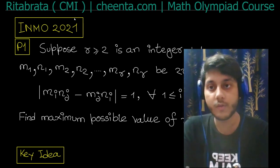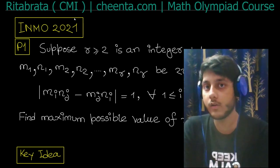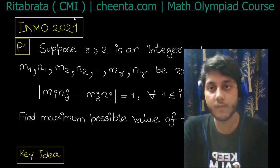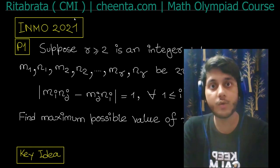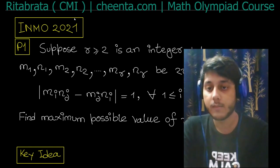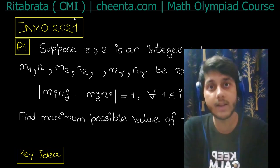The question says: r greater than 2 is an integer. m₁, n₁, m₂, n₂, ..., mᵣ, nᵣ are 2r integers. We have |mᵢnⱼ - mⱼnᵢ| = 1 for all i < j. Find the maximum possible value of r.